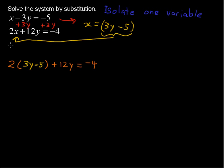Okay, now let's distribute the two. And because we have two times that entire expression, what you're left with is 6y minus 10 plus 12y equals negative 4.